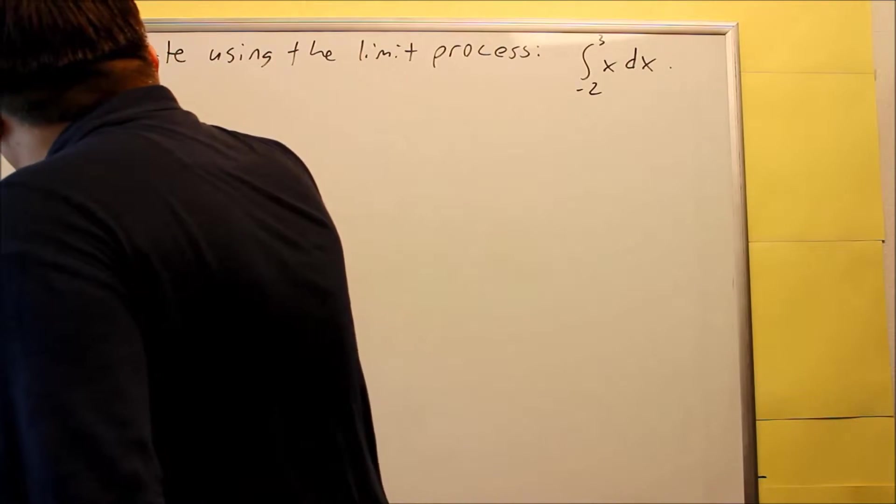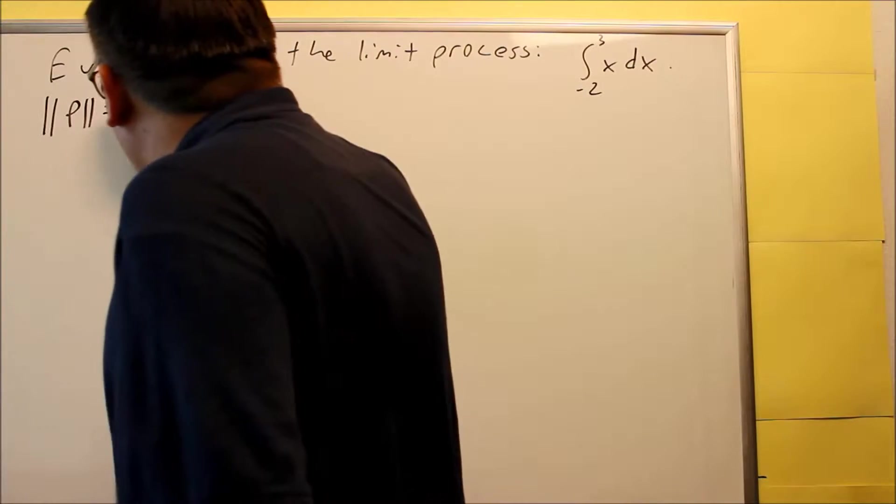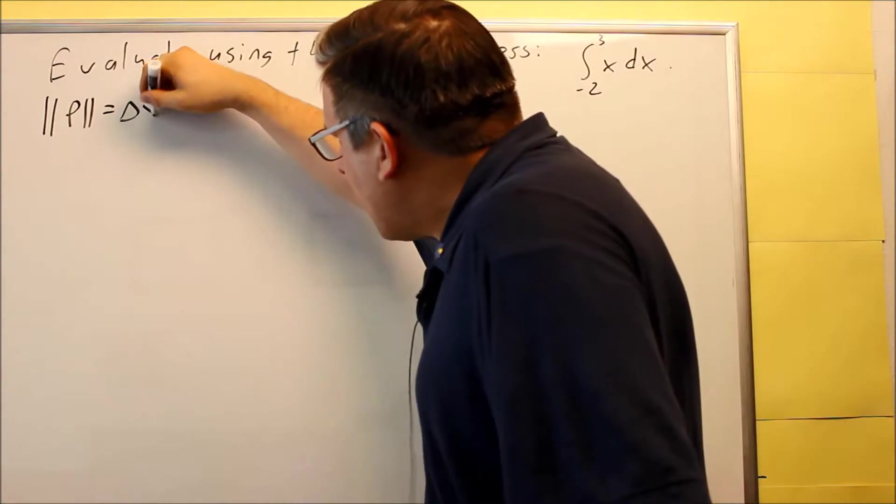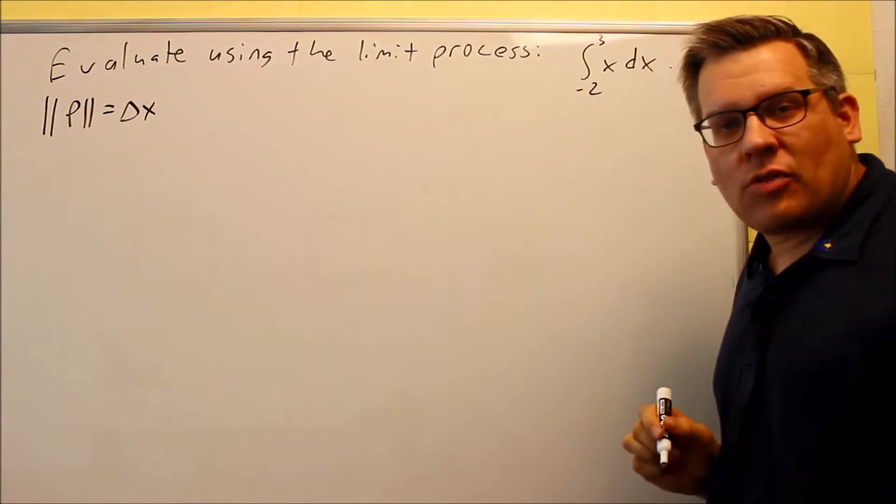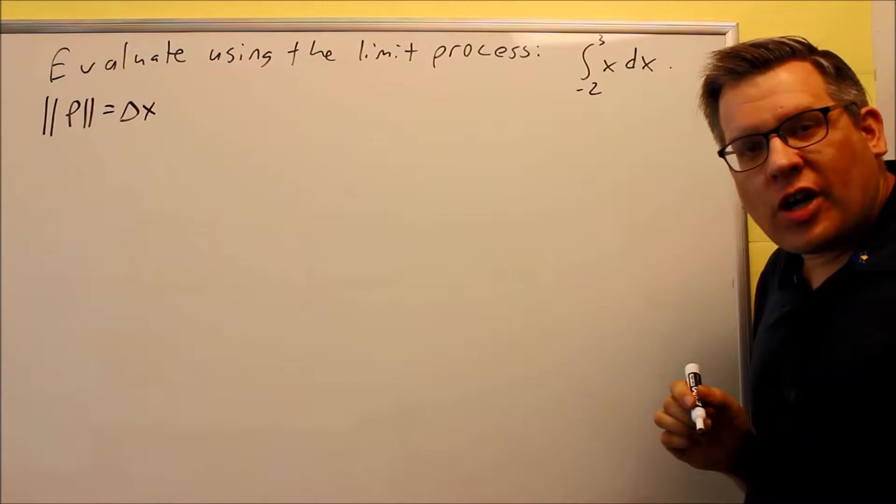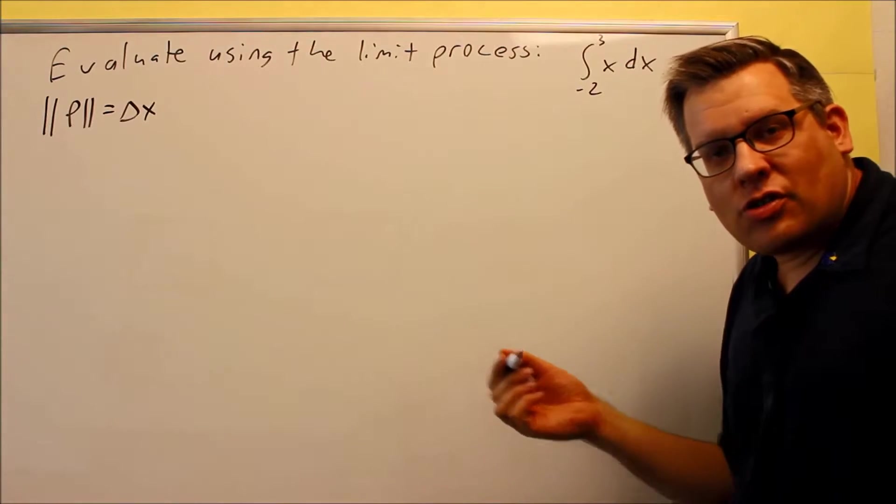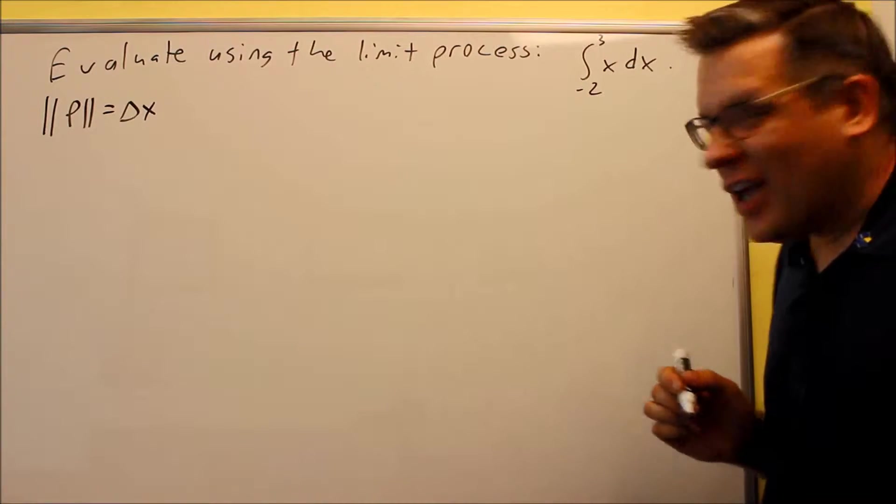So, in this case, we want to find out what the norm is. Well, the norm we talked about before is going to be the same thing as delta x, and so we have a formula for delta x that we did use in a previous section. That's b minus a over n.